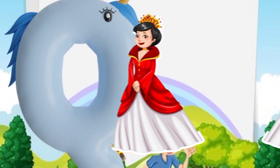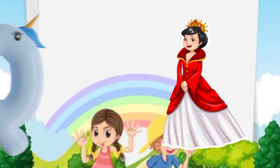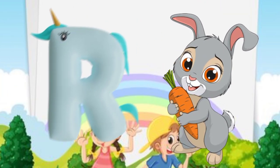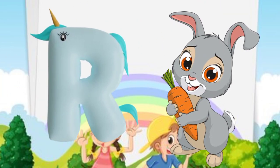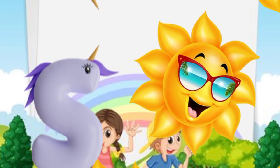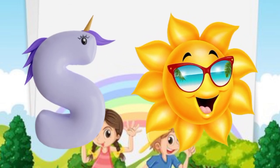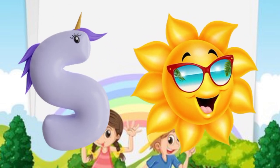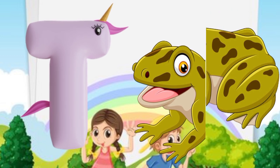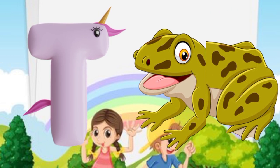Q is for queen, qu-qu-queen. R is for rabbit, r-r-rabbit. S is for sun, s-s-sun. T is for toad, t-t-toad.